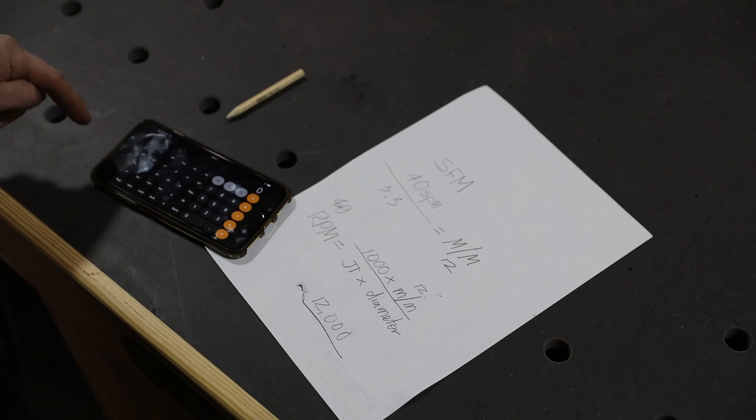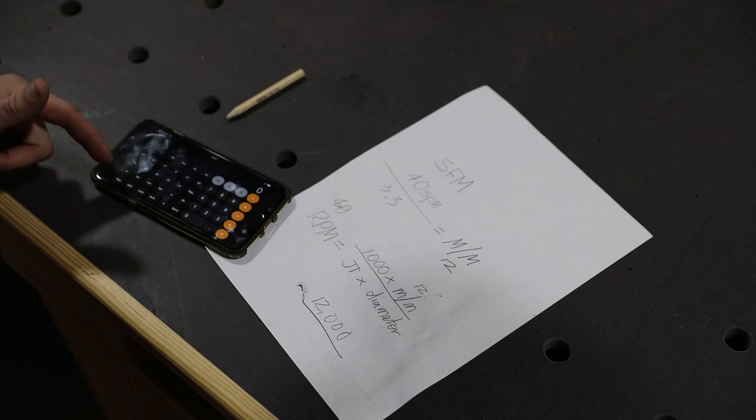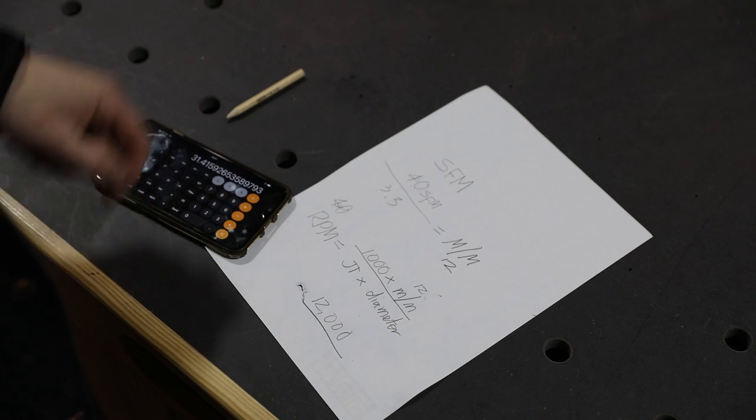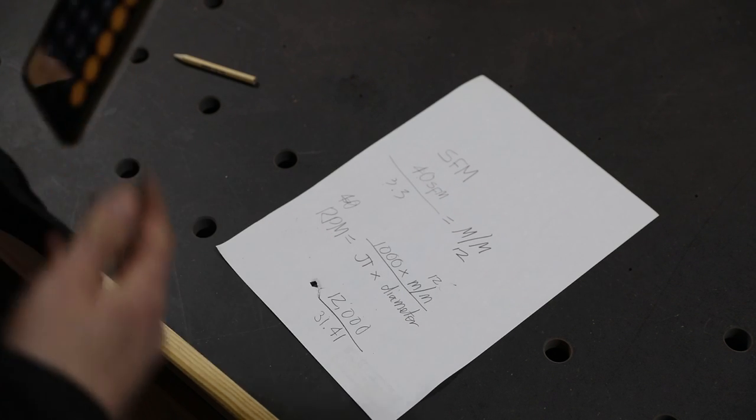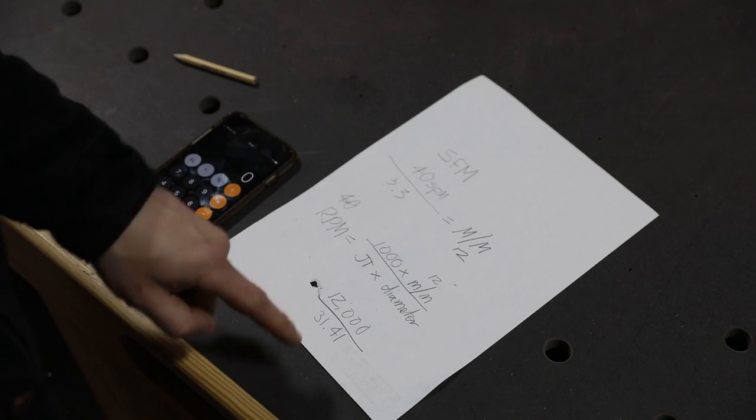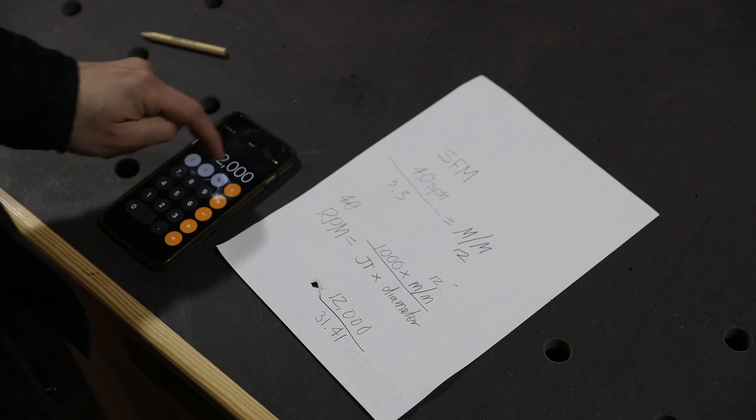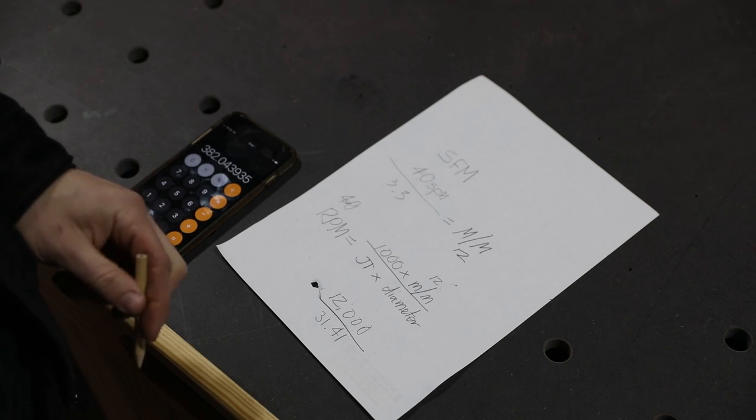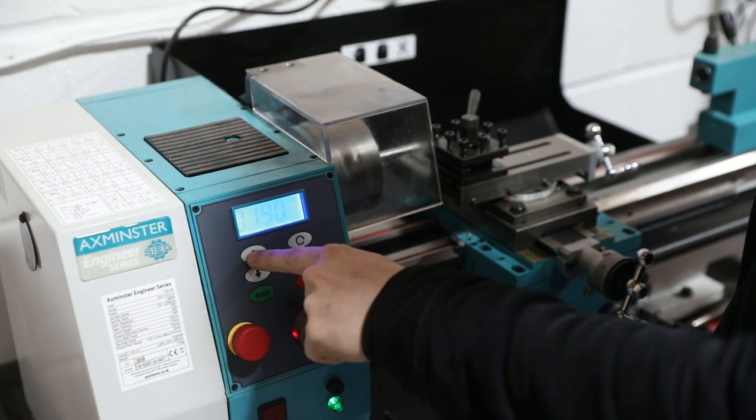So 40 divided by 3.3 is about 12. You round it to the nearest number to make it easier, which means that the RPM I need on the lathe is 1,000 times 12. So we've got 12,000 over pi times the diameter of the piece. This is far more challenging than woodturning already. Pi times the diameter of the piece, which is 10, equals 31.41. But apparently if I divide 12,000 by 31.41, I should get the RPM of the lathe. 12,000 divided by 31.41 equals 382. So we will set the lathe to the nearest that I can get to 382, which is probably going to be 380.